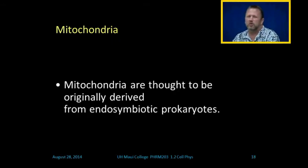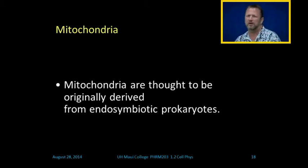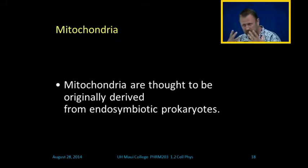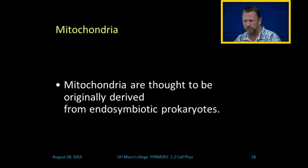Mitochondria are thought to be originally derived from endosymbiotic prokaryotes. Endo means inside; symbiotic means a relationship where one depends on the other. Prokaryotes are ancient cells without nuclei. What they think happened is a bacteria entered into a cell and started producing a substance beneficial to that cell, and that cell provided the nutrients to make the mitochondria go — and this symbiosis has been going on ever since.